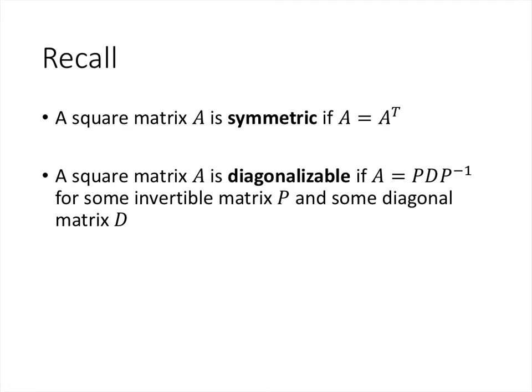So first of all, what is a symmetric matrix? A matrix is symmetric if, when we take its transpose, we get the same matrix that we started with. So of course the matrix has to be square for that to happen, and the entries on the opposite sides of the diagonal have to be equal to each other.